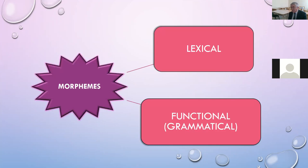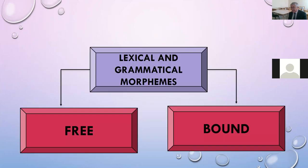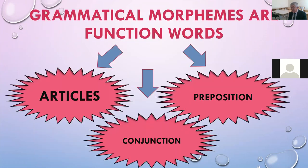Morphemes are divided into two large groups: lexical morphemes and functional or grammatical morphemes. Both lexical and grammatical morphemes can be free and bound. Free lexical morphemes are roots of words which express the lexical meaning. Free grammatical morphemes are function words: articles, prepositions, and conjunctions.